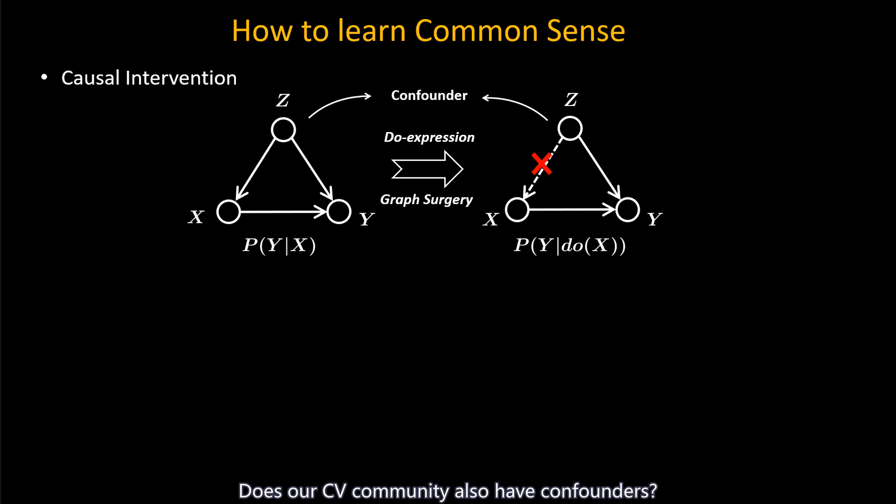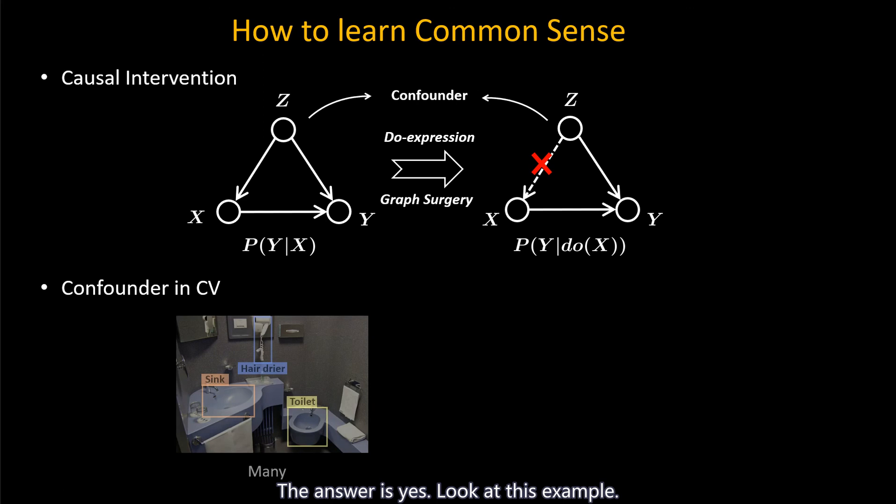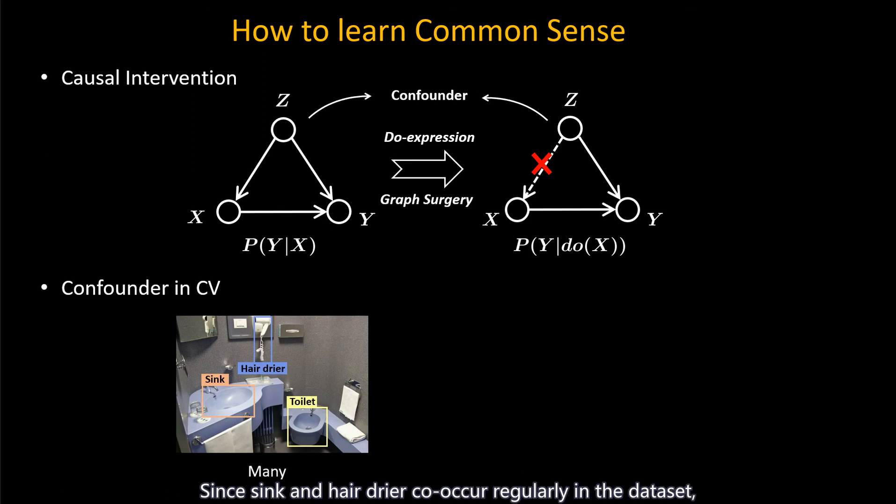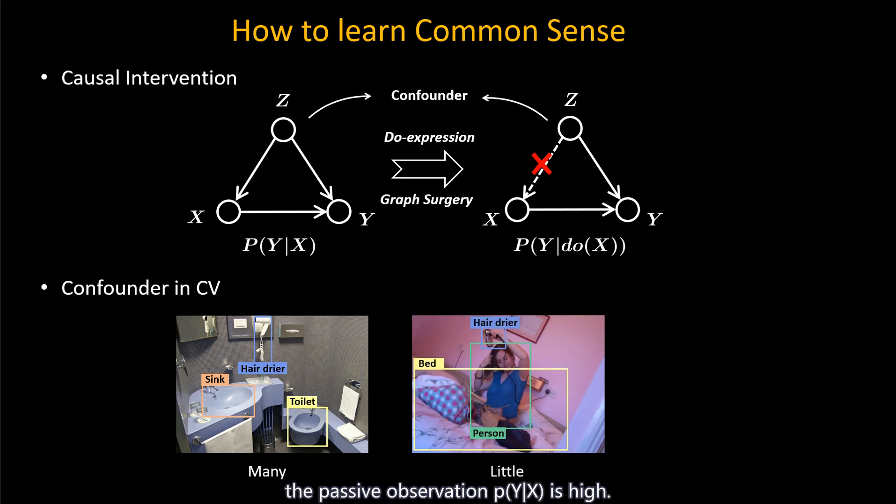Then, does our CV community also have confounders? The answer is yes. Look at this example. Since the sink and hairdryer co-occur regularly in the dataset, the passive observation P(Y|X) is high. However, this value is actually confounded by the restroom contexts, such as towel, bottle, and so on.